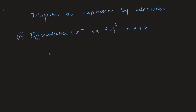Applying the chain rule: bring the power down to get 6(x² - 3x + 5)⁵, then differentiate the inside to get (2x - 3). So the result is 6(2x - 3)(x² - 3x + 5)⁵.